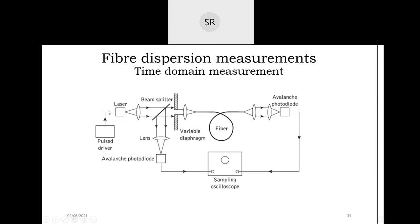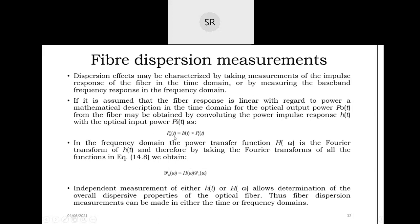The output power is a convolution of the impulse response and the input optical power: P(t) = h(t) * E_in(t). In the frequency domain, the output power with respect to frequency equals the power transfer function H(f) times the input. Dispersion measurement can be done in the time domain or frequency domain.